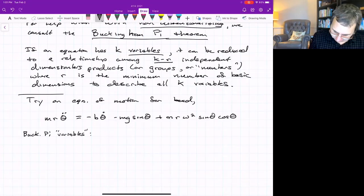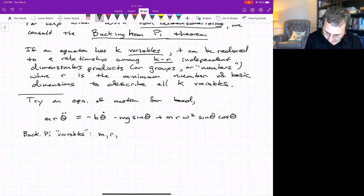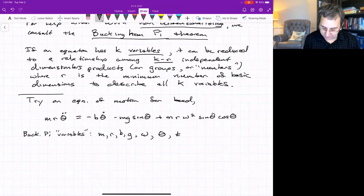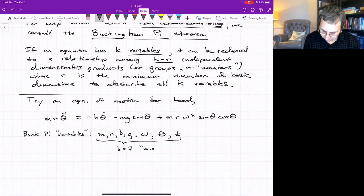If we call these Buckingham pi variables, what it calls variables, what do we have? Let me just go through. We've got the five things I called parameters: m, r, b, g, omega, but then we also have theta and t.